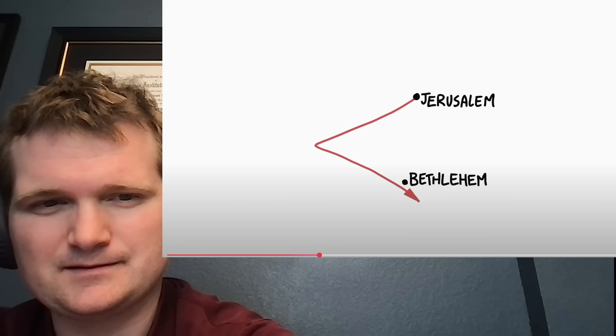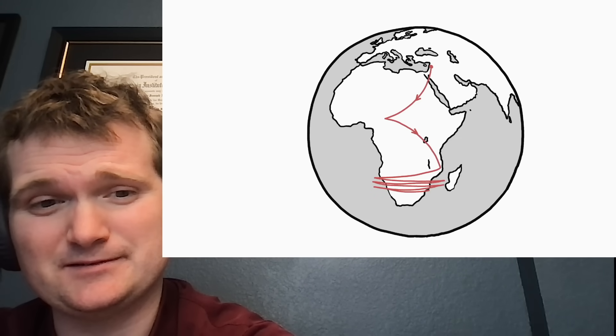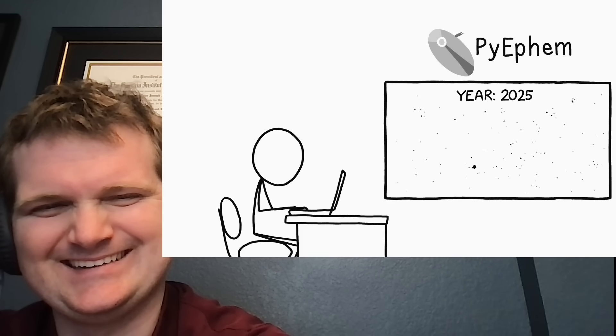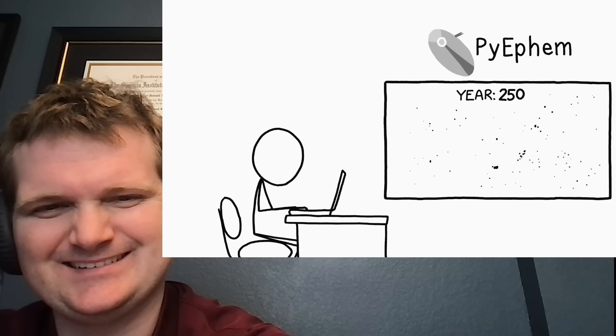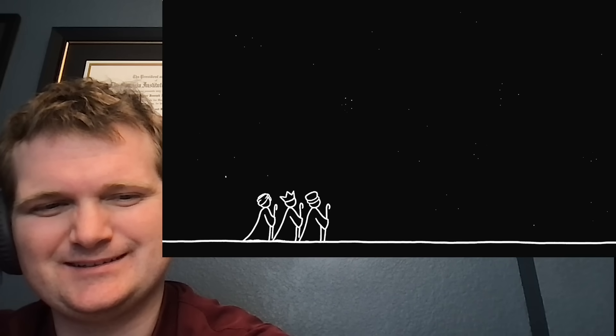Their path actually takes them through Bethlehem. If they don't stop there, after a few years, they wind up circling Botswana. These paths are calculated using, among other things, PyEphem, which provides tools for determining the historical positions of astronomical objects.